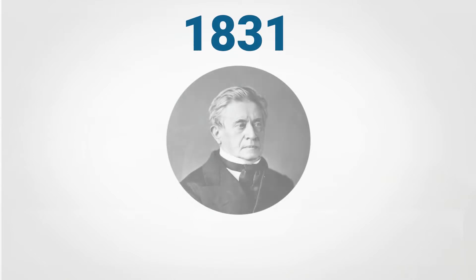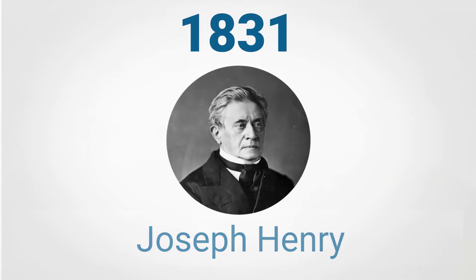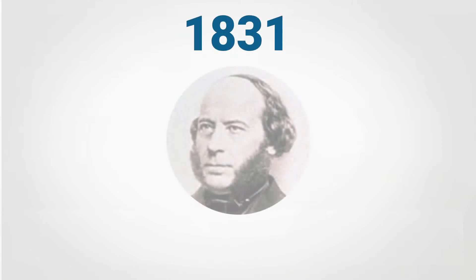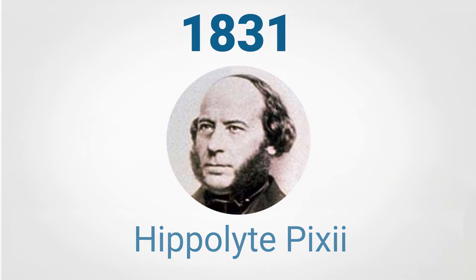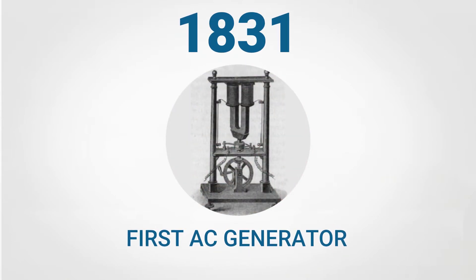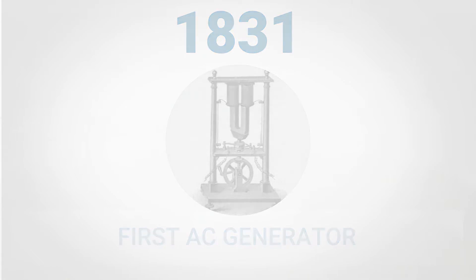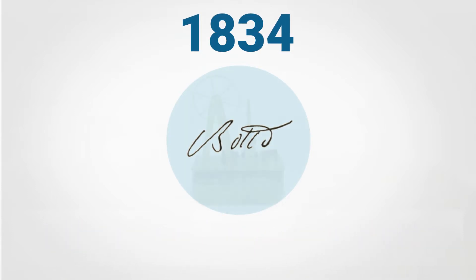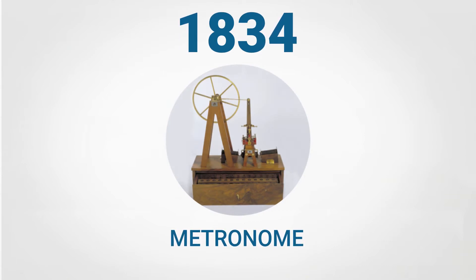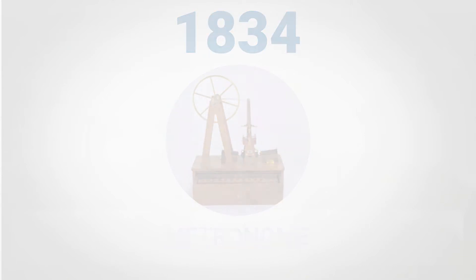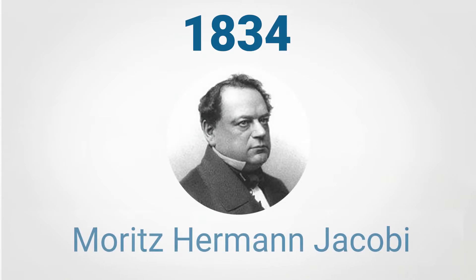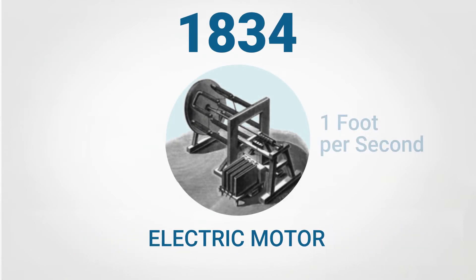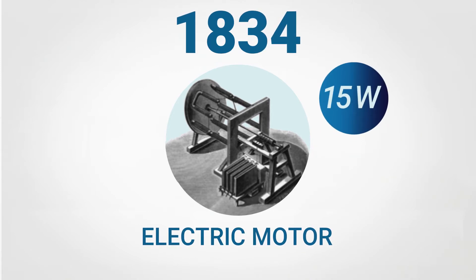In 1831, Joseph Henry builds a small magnetic rocker, describing it as a philosophical toy. In the same year, French instrument maker Hippolyte Pixii builds what can be considered the first apparatus for generating an alternating current out of a rotation. In 1834, Italian physics professor Giuseppe Domenico Botto creates a device corresponding to a metronome, acting on the pendulum with two electromagnets. In the same year, Moritz Hermann Jacobi builds an electric motor able to lift a weight of 10 to 12 pounds at a speed of one foot per second, equivalent to about 15 watts of mechanical power.